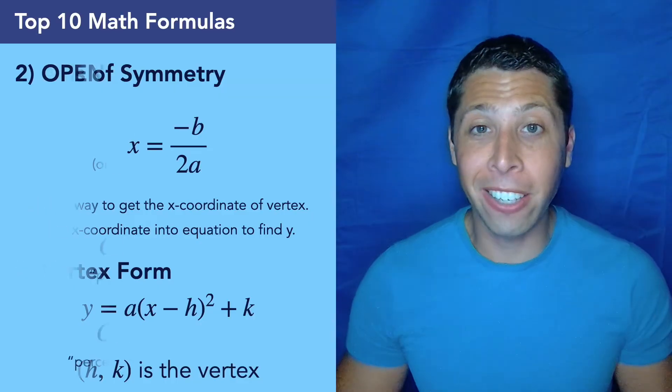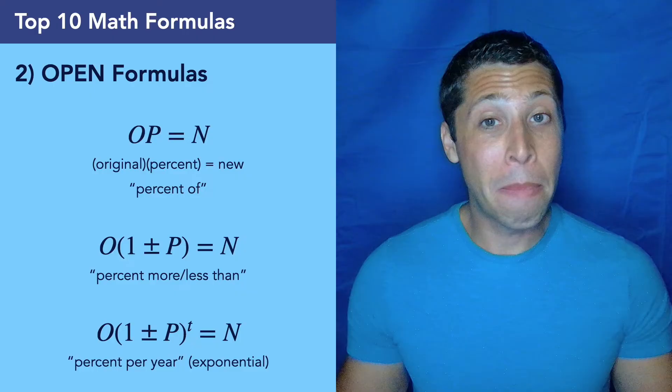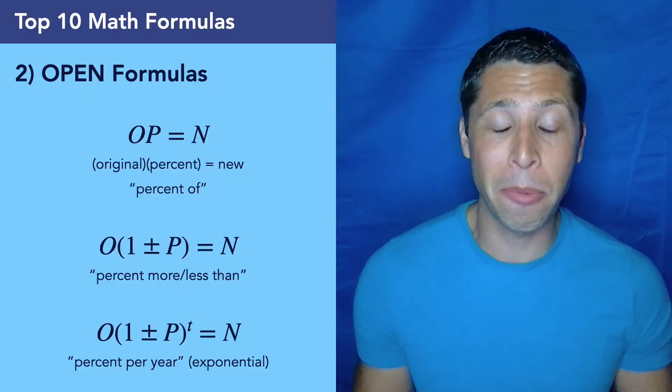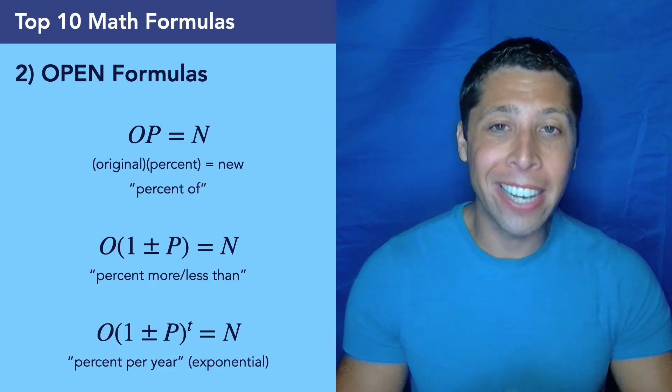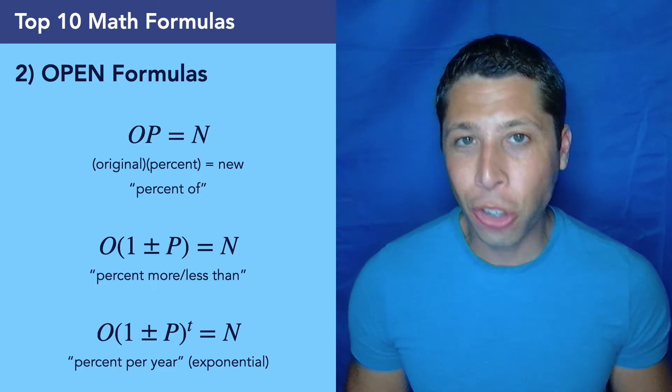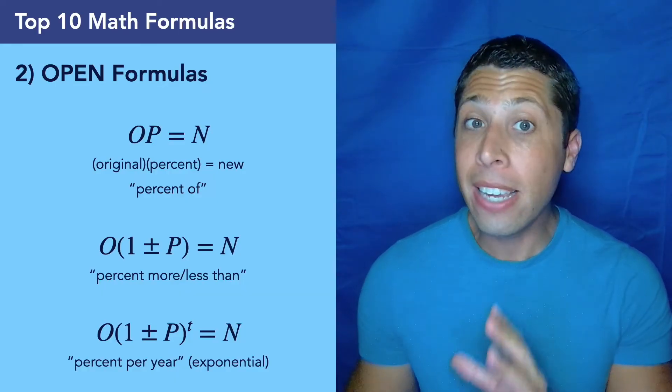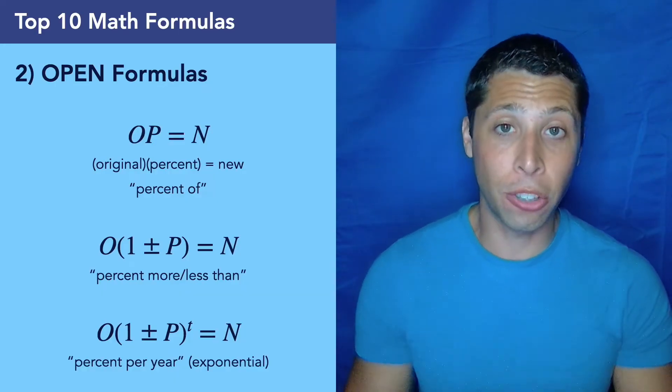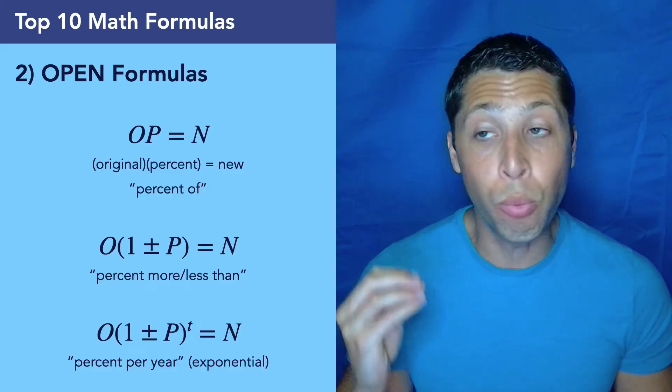Number two on our list, getting near the top here. These are the OPEN formulas. This may seem strange. What is this? Have you ever heard of this before? Probably not, because unless you're subscribed to my channel, this is a completely made up formula that I made because percentages are so annoying on the SAT. It's where a lot of trap answers show up. So I made these three formulas to help us understand how percentages work and to prevent mistakes on these questions. This is really important.